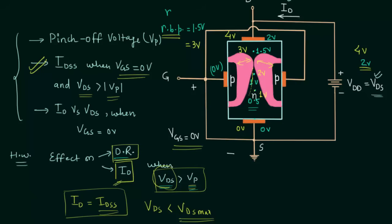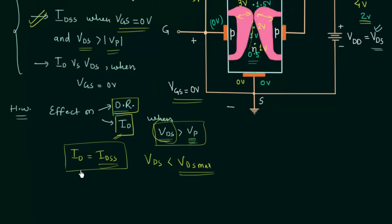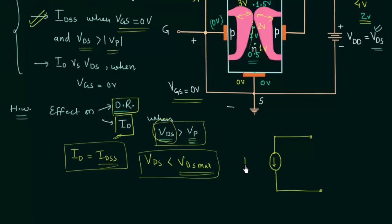Now let's talk about JFET as a current source. When VDS is greater than VP and both conditions are satisfied, ID equals IDSS, which is constant. Therefore, JFET is acting as a constant current source with a value equal to IDSS, and the voltage across it is VDS which is greater than the pinch-off voltage. This is how you can use a JFET as a constant current source.